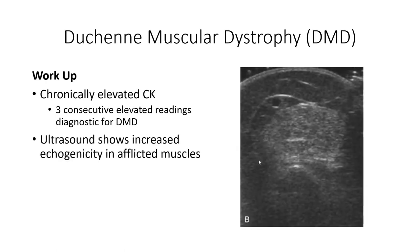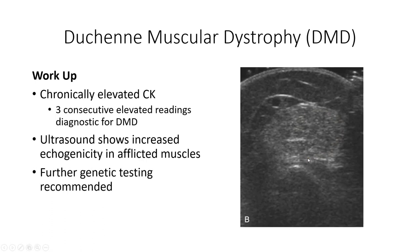Ultrasound can also demonstrate increased echogenicity in weakened muscles due to increased fibrosis and edema. When initial positive tests are confirmed, patients are typically referred for more extensive genetic testing to determine the precise form of gene mutation. Echocardiography is also warranted, as the loss of dystrophin will also have an impact on cardiac muscle.